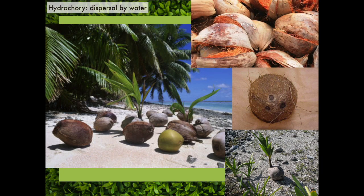Hydrochory is not the most typical type of dispersal, but it's been very effective for a very familiar species — coconuts. Coconuts are a very strange kind of fruit, in that they have an outer husk, then a very fibrous layer inside, and then the seed inside — the thing with the three holes on it. That's actually the endocarp, which contains the embryonic plant. These coconuts can float on the ocean for many miles, going from one island to another, and can land on a beach and colonize a whole new island.